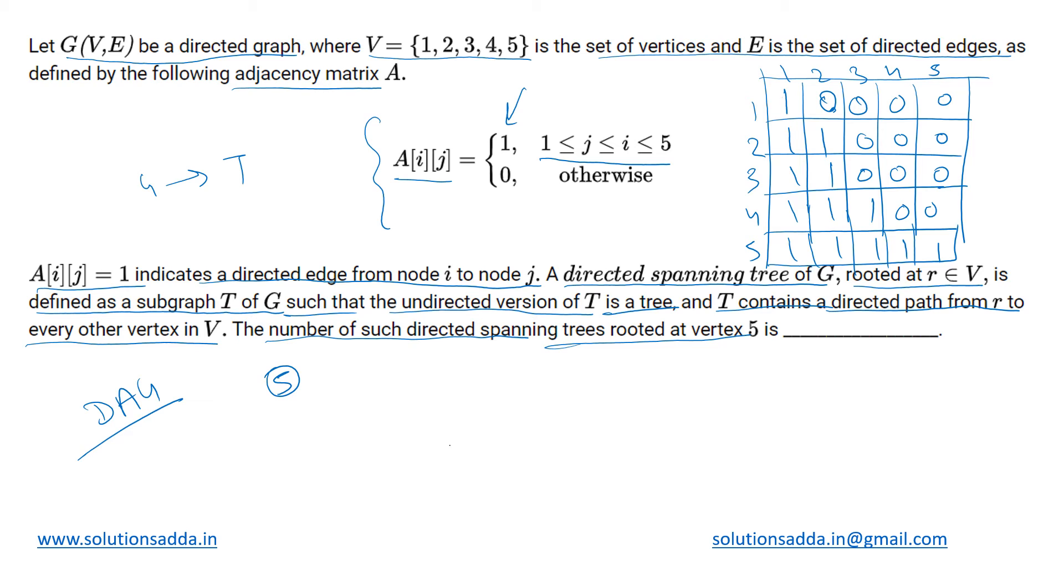If we are starting from 5, we have to find out the number of such DAGs such that they will cover all of the remaining nodes—that is 1, 2, 3, and 4—in the path and in any order. We are just concerned that this should be a tree, this DAG when we construct, and the undirected version of that represents the directed spanning tree.